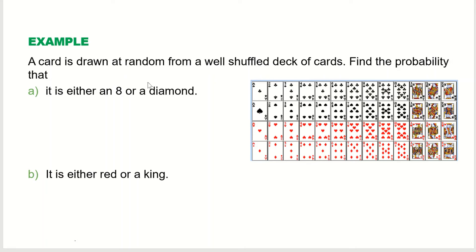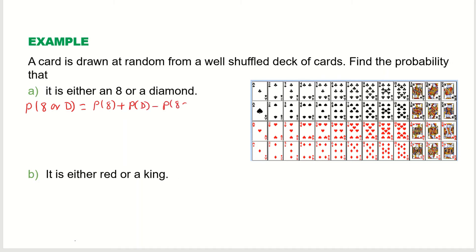Here is the example: a card is drawn at random from a well-shuffled deck of cards. Find the probability that it is either an 8 or a diamond. You can see there is one card — the 8 of diamonds — which is both an 8 and a diamond. So these two events can occur at the same time, making this a joint probability. Since there is an OR, we use the addition rule: probability of 8, plus probability of diamond, minus probability of 8 and diamond.